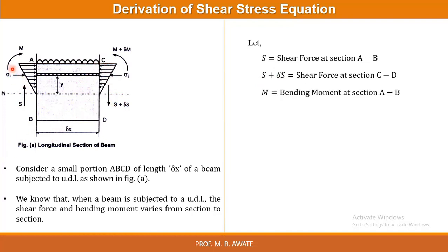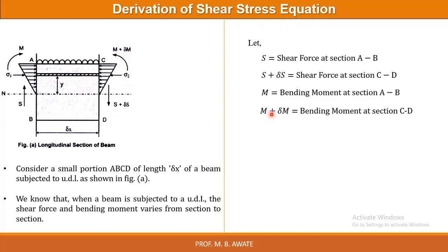M is the bending moment at section AB. And M plus delta M is the bending moment at section CD. M plus delta M means a slight addition in the bending moment at section CD. Both are acting in opposite directions.